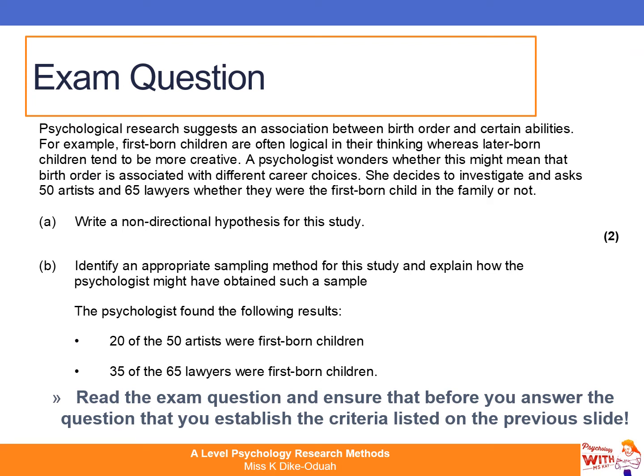Here is our focus exam question for today. It reads: psychological research suggests an association between birth order and certain abilities. For example, firstborn children are often logical in their thinking, whereas later-born children tend to be more creative. A psychologist wonders whether birth order is associated with different career choices. She investigates and asks 50 artists and 65 lawyers whether they were the firstborn child in the family or not. In this question, the thing being changed is birth order and the thing being measured is career choices. Therefore, our independent variable is birth order and our dependent variable is career choice.